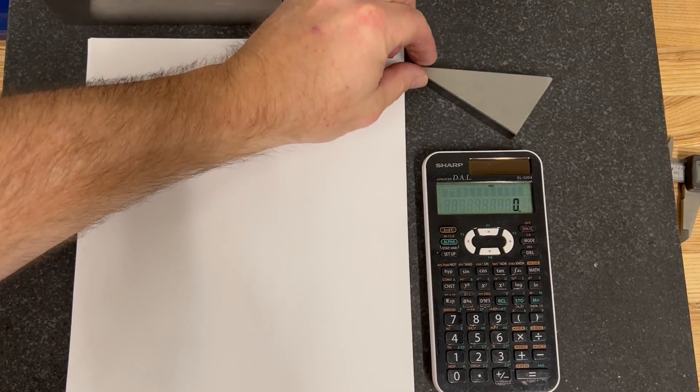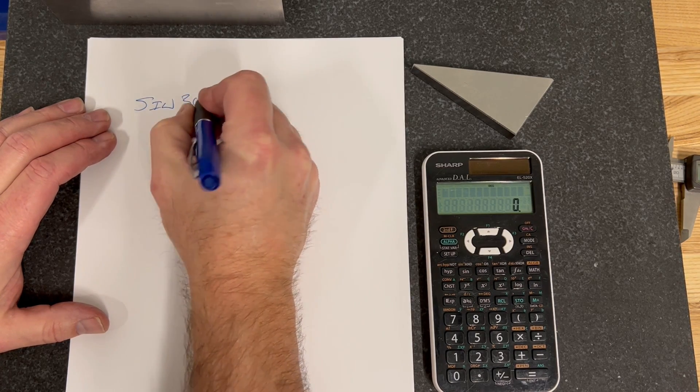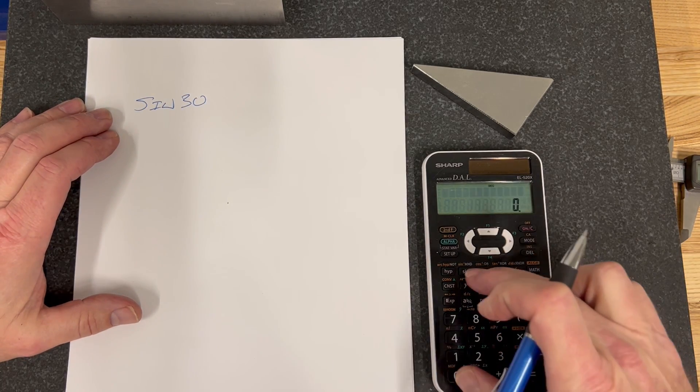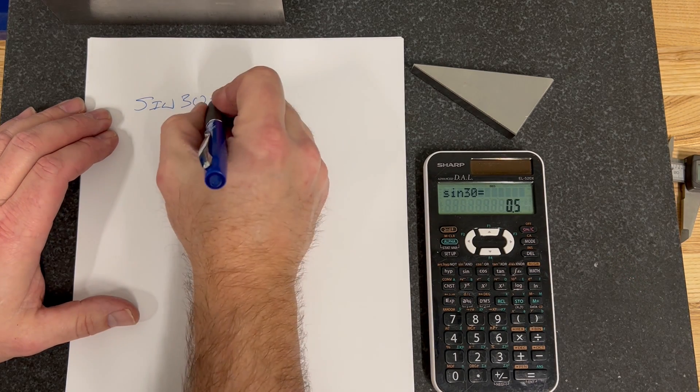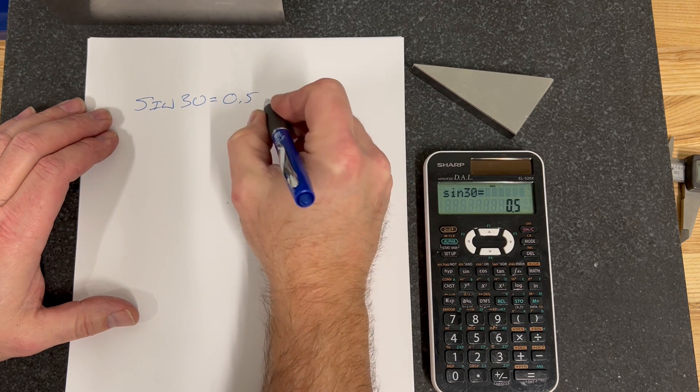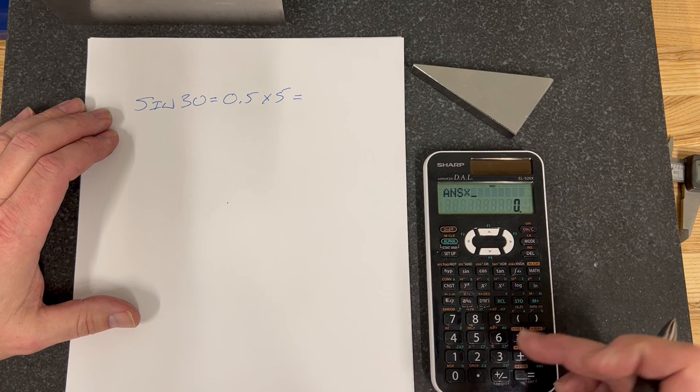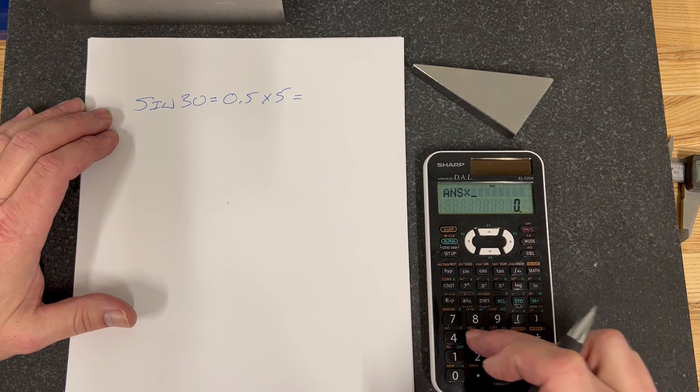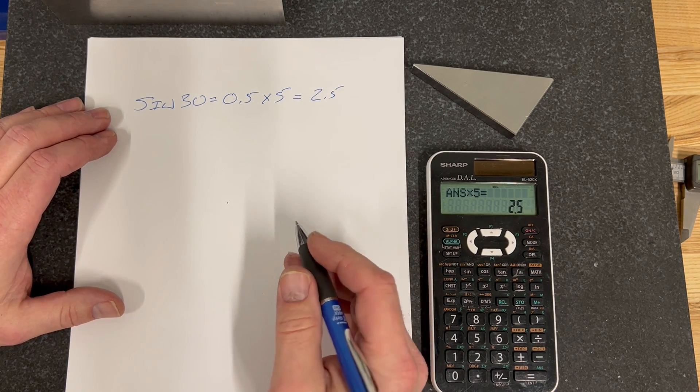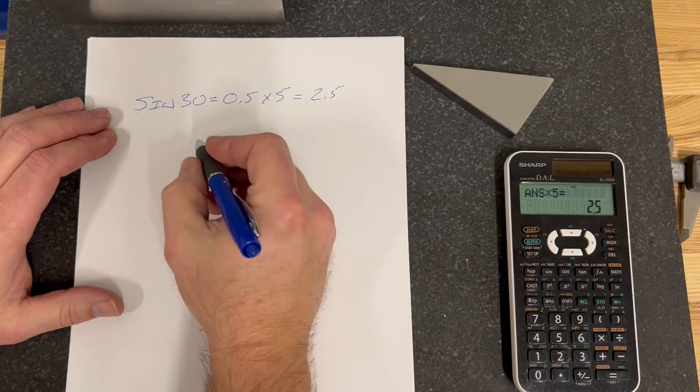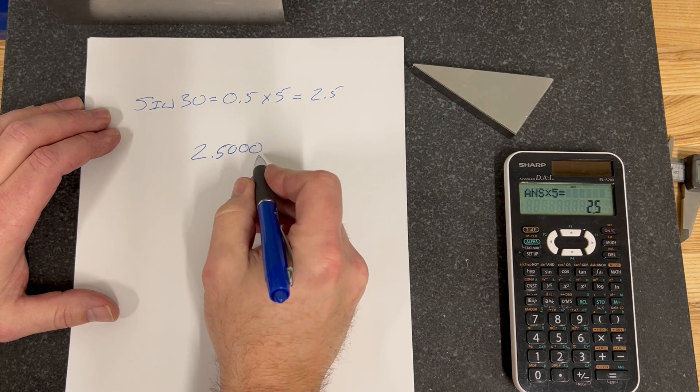Now it's time to set up our sine 30 degrees. We're going to go sine 30 equals 0.5 times 5 equals, I know you're going to say that's 2.5, but that's fine, equals 2.5. That makes the gauge block set up pretty easy. We have 2.5000 because we go back four decimal places.